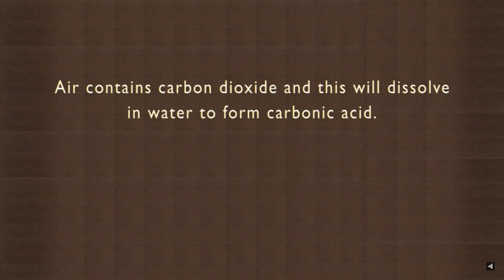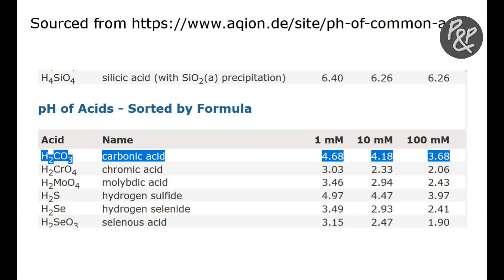Hi there, I'm Peter and in this video we've got a great demonstration for you all about CO2. So first let's start off with the conventional understanding of CO2. If I were to keep this glass of water in the open air for some days, it will become acidic. Air contains carbon dioxide and this will dissolve in water to form carbonic acid. Carbon dioxide is an acidic gas that forms a solution of carbonic acid when saturated in water. Carbonic acid has a pH of 4.68.